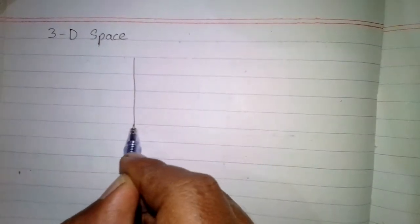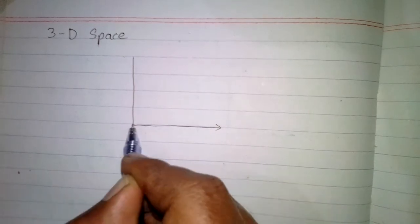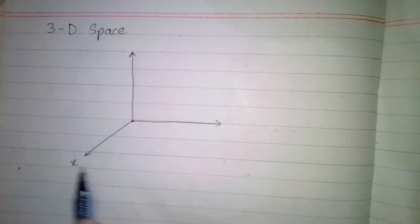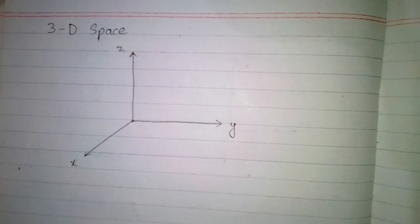In this video we will discuss what is the XY, YZ, and XZ planes explained in three dimensional space. First of all we will draw a three dimensional space in which we have three dimensions: X, Y, and Z, and they are mutually perpendicular.